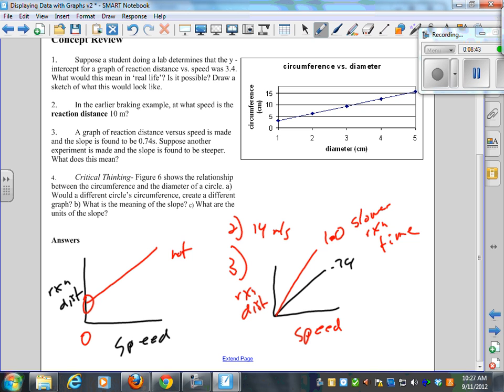Okay, now number four is probably the hardest question yet. Did anybody even read number four, Jenny? Let's read number four together. Figure six shows the relationship between the circumference and the diameter of the circle. Does everybody know what circumference and diameter mean of a circle? Mitchell, tell me. What's the diameter of a circle? Excellent. And circumference? It's all the way around.